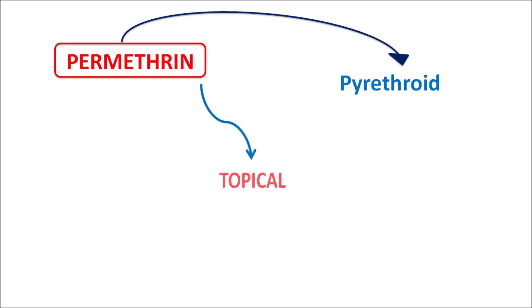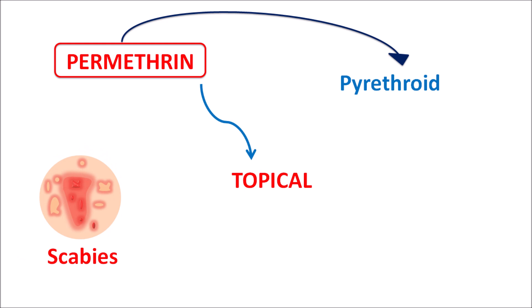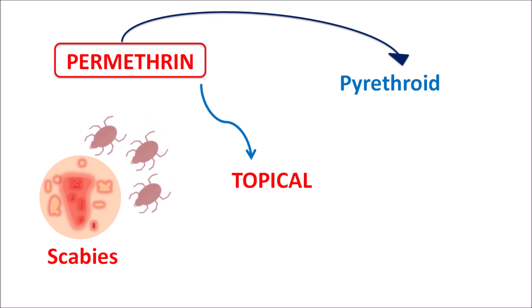Permethrin is used by topical route in order to treat scabies, which is caused by itching mites. Permethrin can control the scabies and itching caused by these mites by inhibiting their neuronal excitation, thereby paralyzing the skeletal muscle.